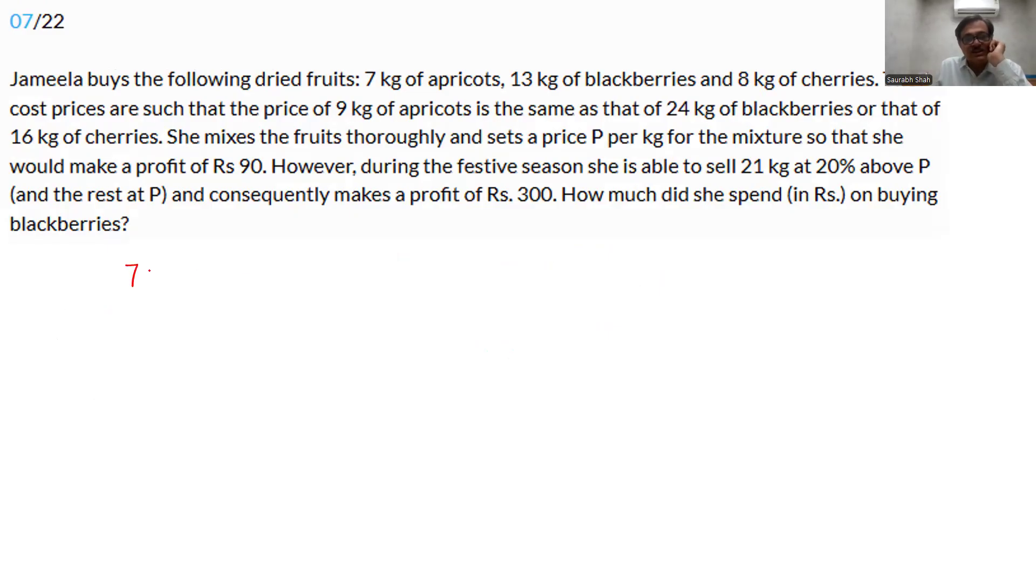So we have 7 kilograms of apricot, 13 kilograms of blueberries and 8 kilograms of cherries. A total of 7, 13, 8 is 28 kilograms. Now something is mentioned about the costs. 9 kilograms of apricot, 9A, let A be the cost of an apricot, is equal to 24 kilograms of blueberries and that's the same as 16 kilograms of cherries. Remember, these are not the ratios. The terms of the ratio are in the denominator. Divide the whole equation by 144, the LCM. We have A by 16 is equal to B by 6 is equal to C by 9. The cost ratios are 16, 6, 9.